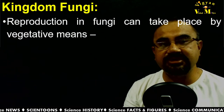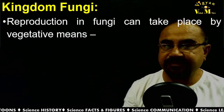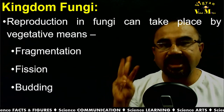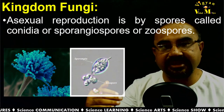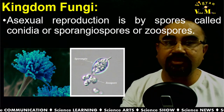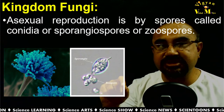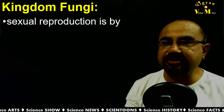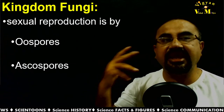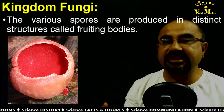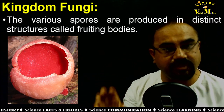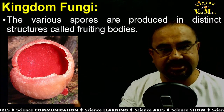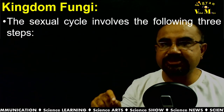Reproduction in fungi can take place in three different ways. Vegetative reproduction occurs by fragmentation, fission, and budding. Asexual reproduction occurs through spores — otherwise known as conidia, sporangiospores, or zoospores. Sexual reproduction takes place by oospores, ascospores, and basidiospores. These various sexual spores grow in particular fruiting bodies, and accordingly the fungi are classified.